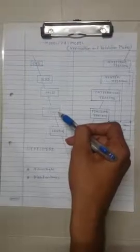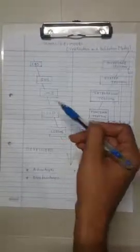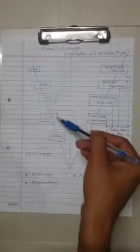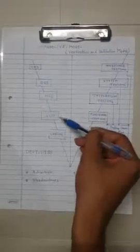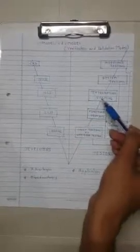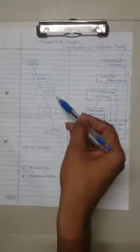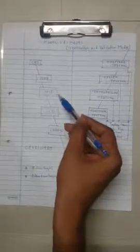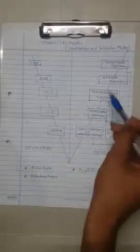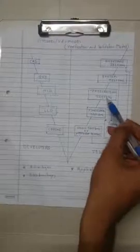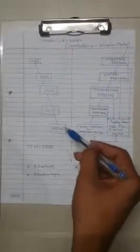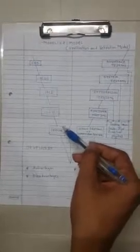In the third stage, the developers start building the Low Level Design of the project. While developers are designing the Low Level Design, the testing team is testing the High Level Design. The testing team reviews the HLD and writes the integration test plan and integration test cases. In the next stage, the developers start with the coding of the product.